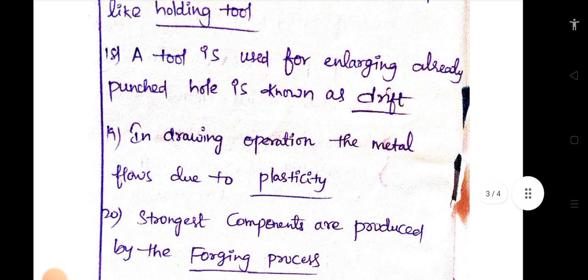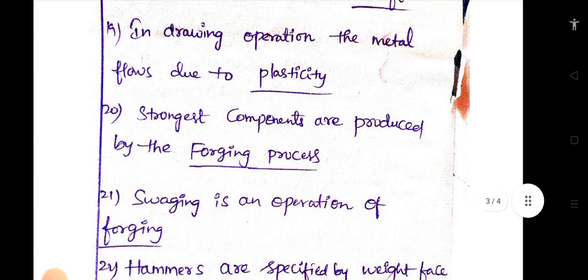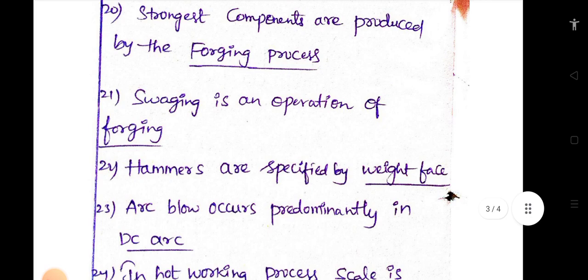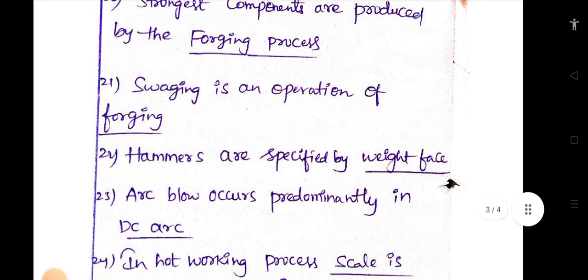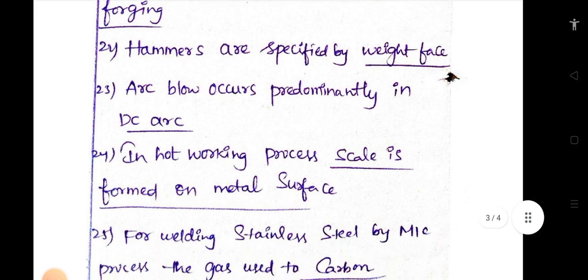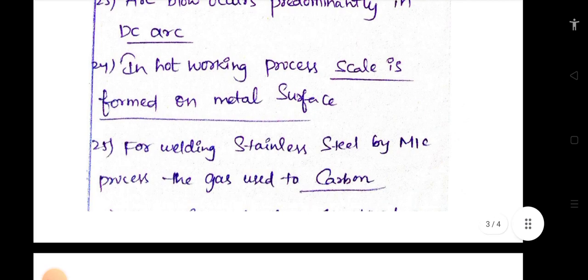In forging, a punched hole is known as drift. In drawing operation, the metal flows due to plasticity. Strongest components are produced by the forging process. Swagging is an operation of forging. Hammers are specified by weight. Arc blow occurs predominantly in DC arc. In hot working process, scale is formed on metal surface.